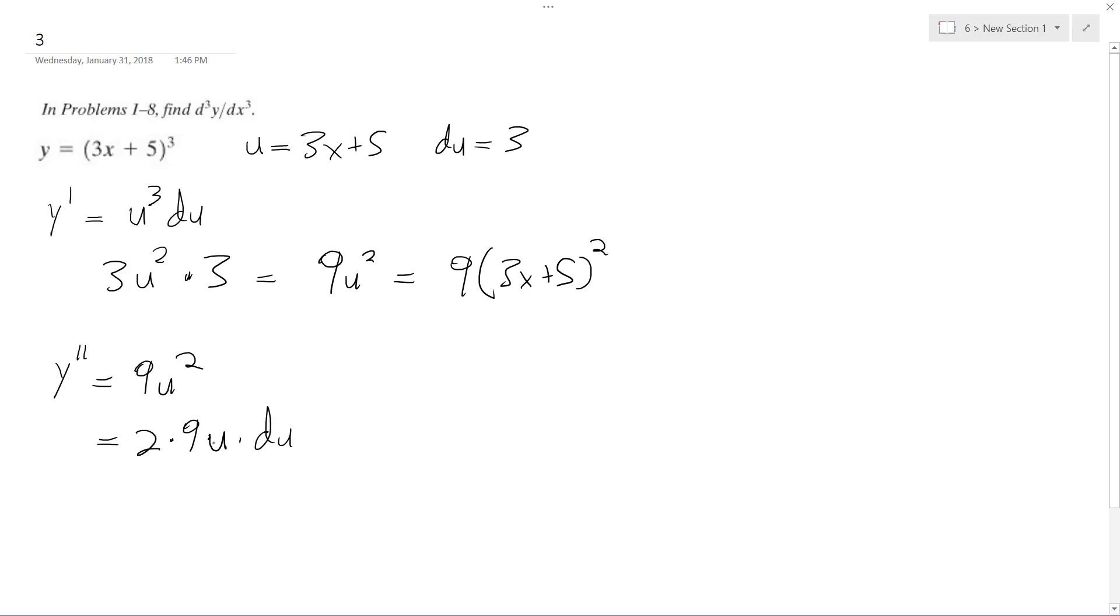And then we'll substitute back in. So we get 18(3x + 5) times 3. So finally, it ends up being 27(3x...